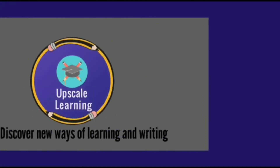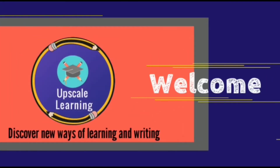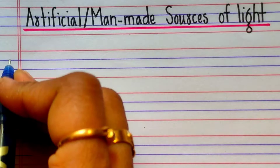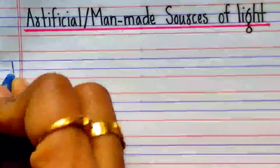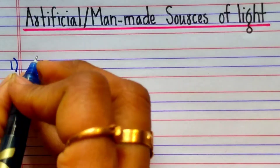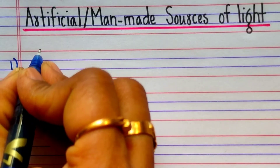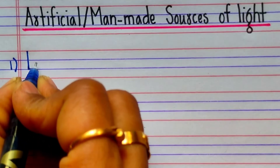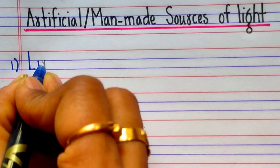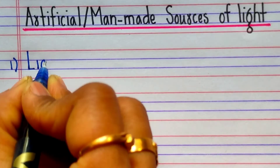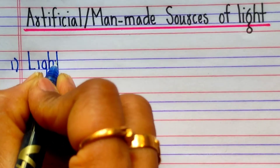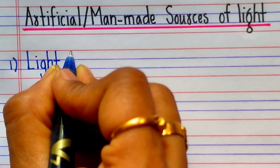Welcome to our channel Upscale Learning. Hi friends, we are going to write 10 artificial sources of light. First one is light bulb — L-I-G-H-T light.